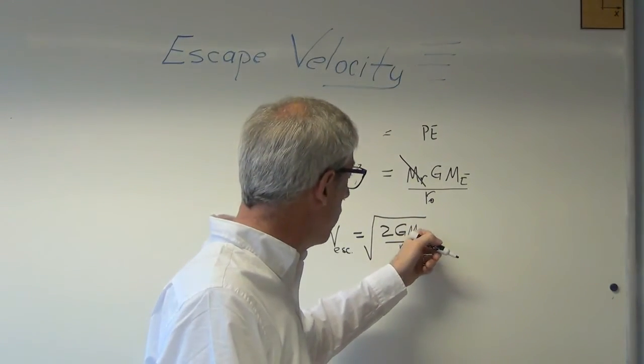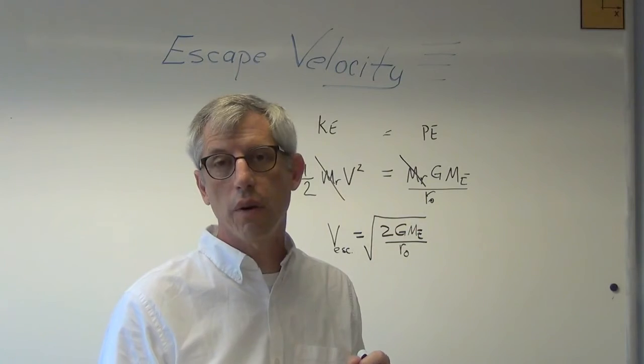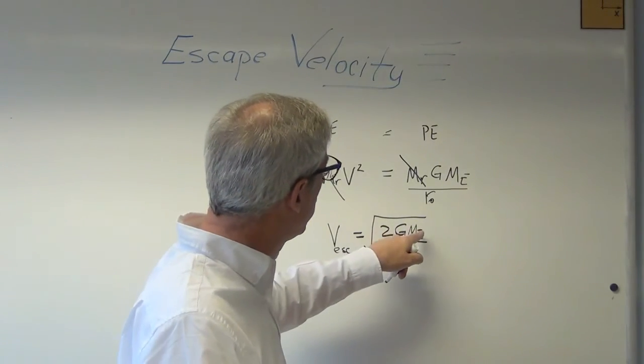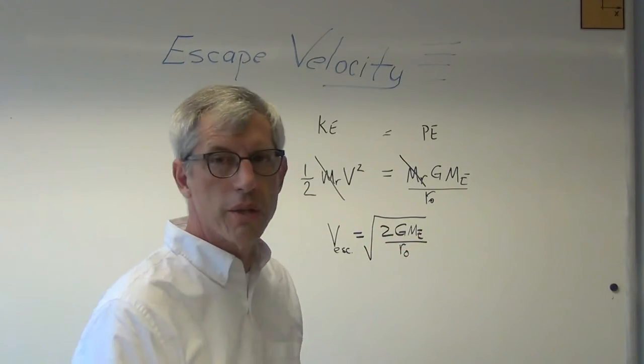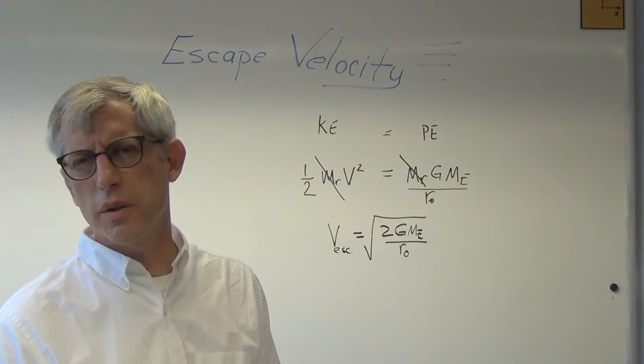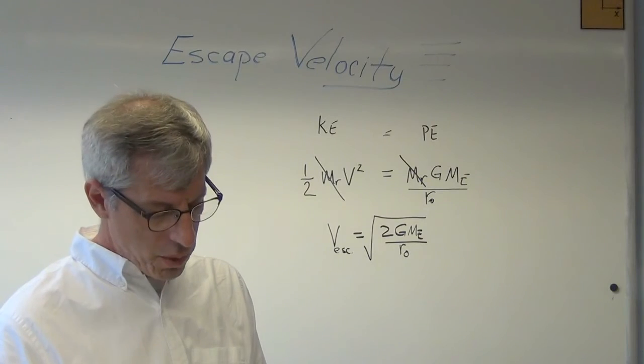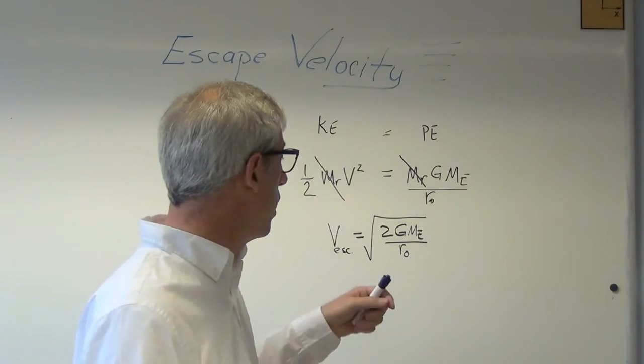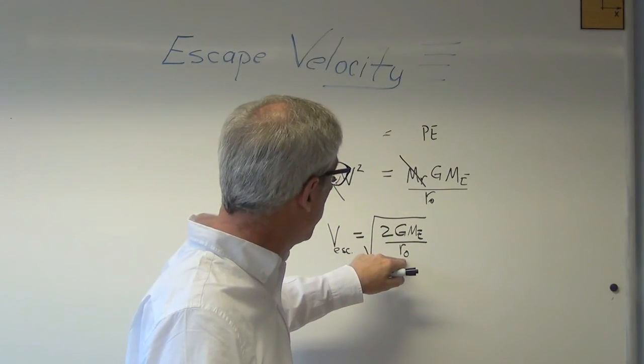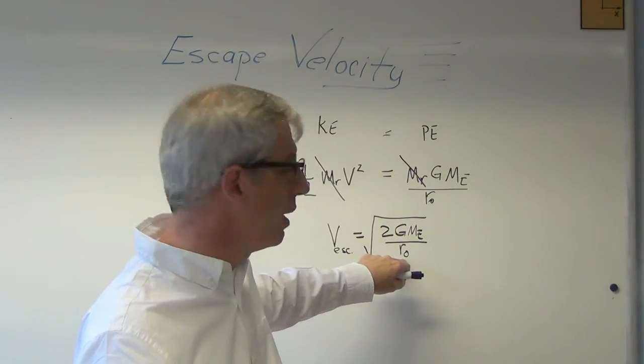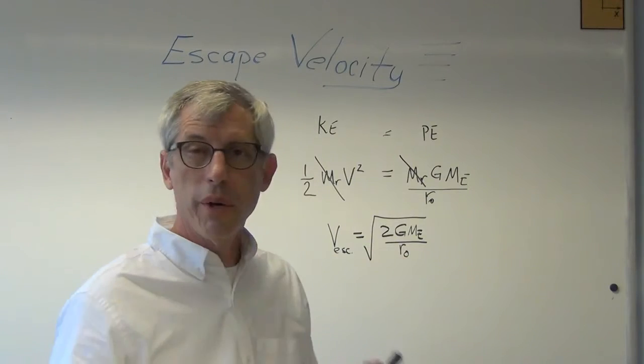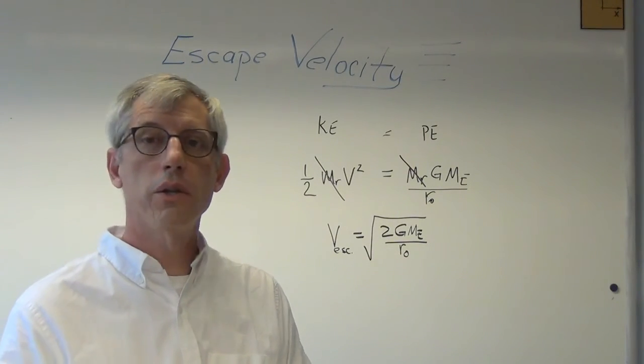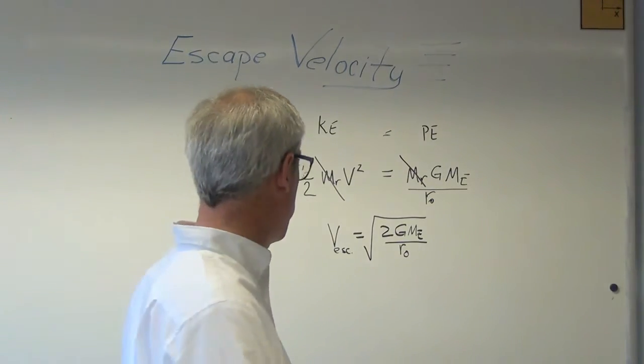Now, I've written it in terms of earth, m sub e, mass of the earth. Would that work for other planets? Sure. You want it to be the sun? All right. Make that the mass of the sun, and make that the radius. Well, if you're on the surface of the sun, my guess is you've got bigger problems. But what do you suppose the escape velocity for earth is, with respect to the sun? We're 93 million miles away. We could make that the mass of the sun. We could make that 93 million miles, or whatever that is in meters. And we could figure out how much velocity the earth would have to have to escape from the sun, starting from our current orbit.